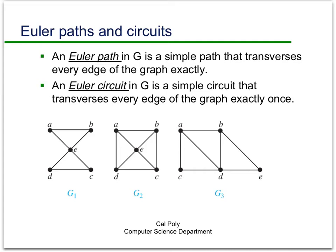So G1 has an Euler circuit. Let's start at A, for instance: come down through E, go to C, D, back through E, and back to A. Notice there's no restriction on the number of times you visit a vertex, only on the number of times you visit an edge.